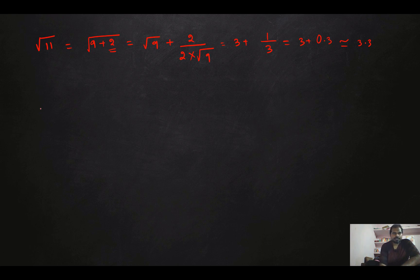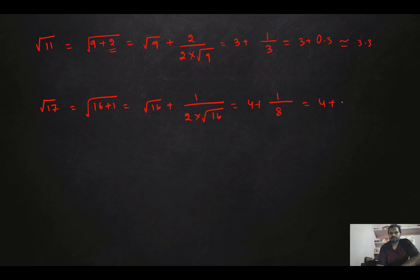Let's take another example: root over 17. Here the perfect square number nearest to 17 is 16. So you can write it as root(16 plus 1), which equals root(16) plus 1 divided by 2 into root(16). That is 4 plus 1/8, which can be written as 4 plus 0.125, or 4.125. This is the approximate value of root over 17.